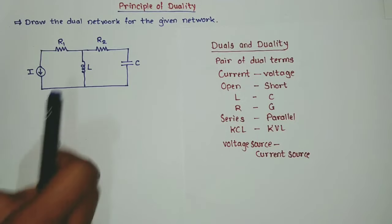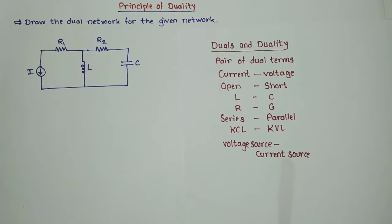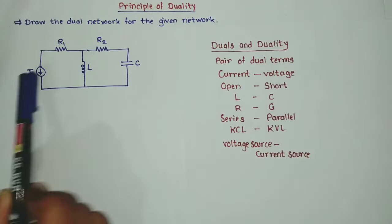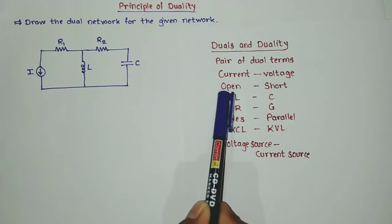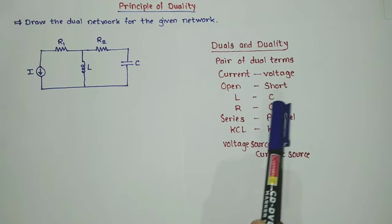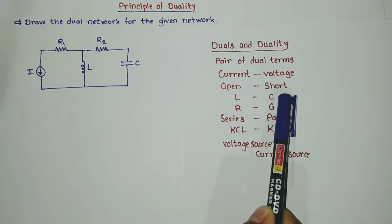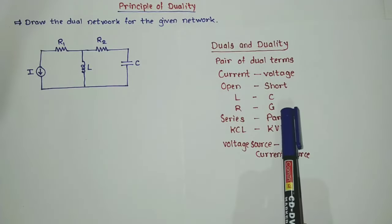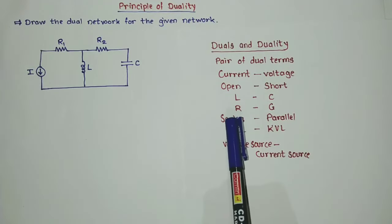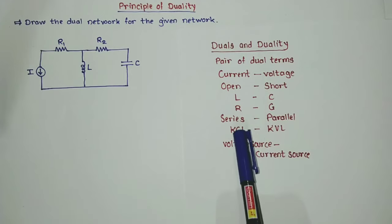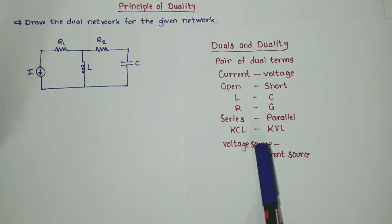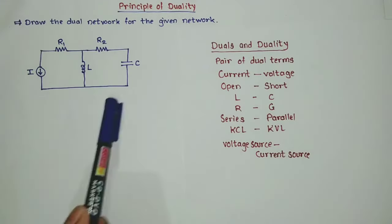First we have to find the dual of this network. Generally, to find out the dual there are some rules and pairs. Current is replaced by voltage. Open circuit is replaced by short circuit. L is replaced by C and C is replaced by L — the vice versa is also true. Resistance is replaced by conductance and conductance by resistance. Series circuit by parallel and parallel by series. KCL is replaced by KVL and KVL by KCL. Voltage source is replaced by current source and current source by voltage source.